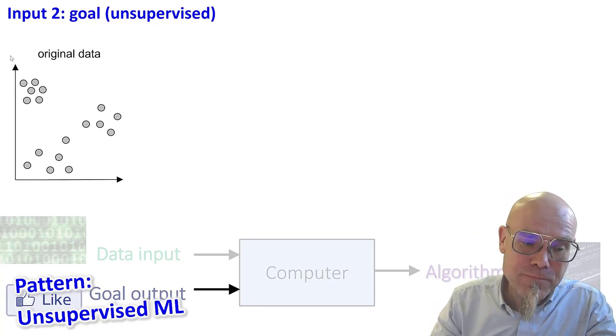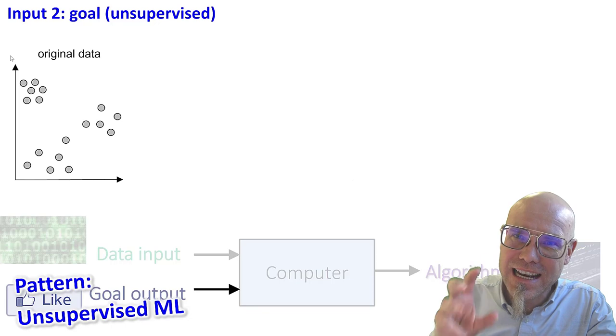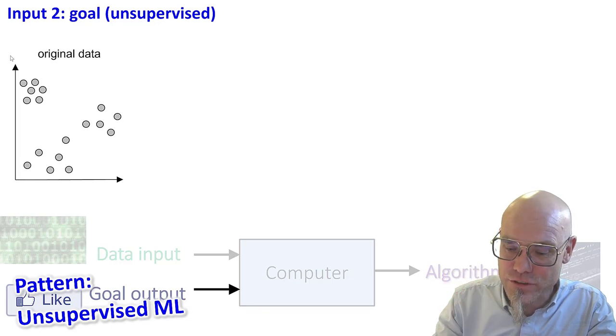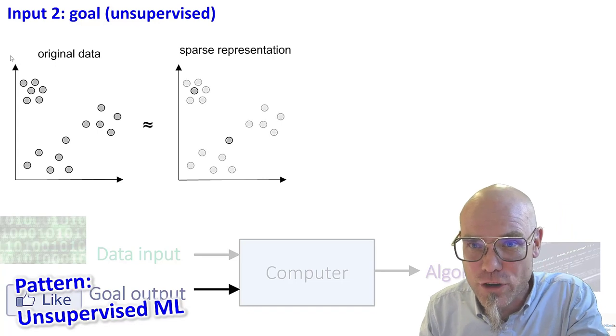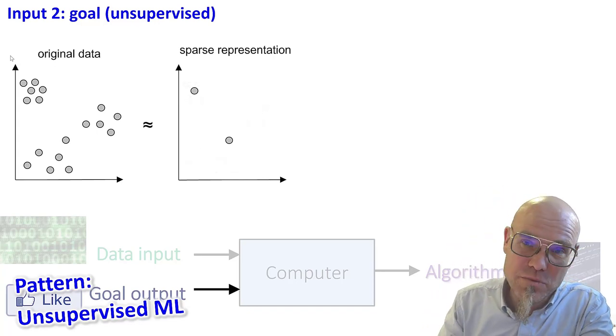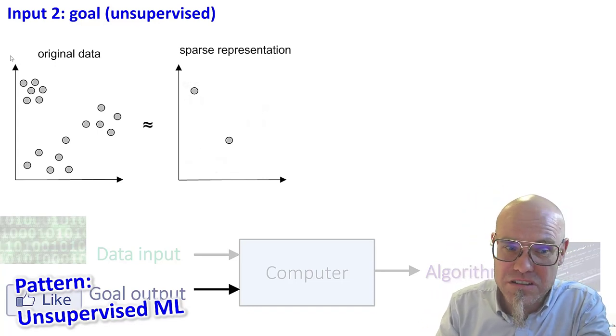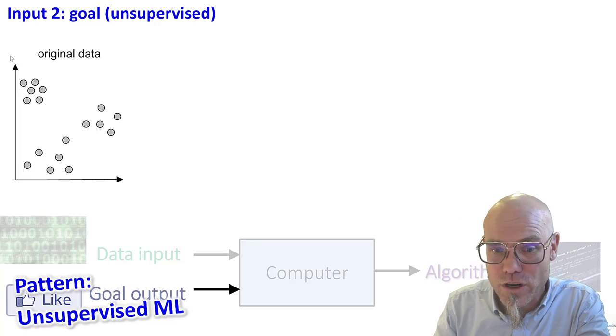So that's my data input. And now I give them a certain class, I give the machine a certain class of what to do. For example, I could say, give me a sparse representation of all these data points. And the machine says, well, these two data points are the ones that actually best represent what you had here, right?